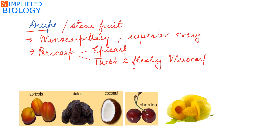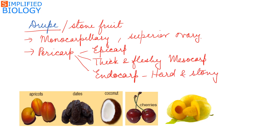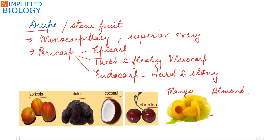The drupe has a hard and stony endocarp that encloses a single seed. Best examples are apricot, dates, coconut, cherries, mango, and almond. The edible part is the epicarp and mesocarp, while in coconut the edible part is the endosperm.